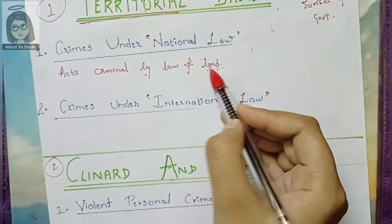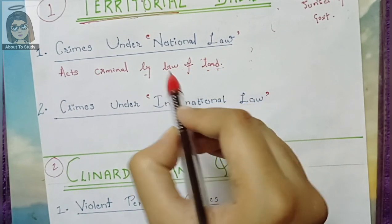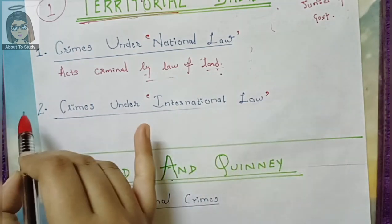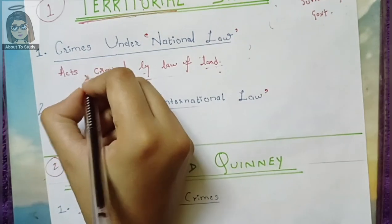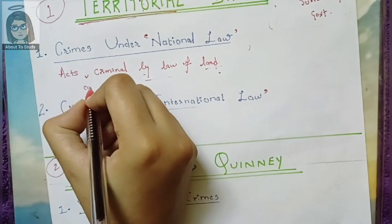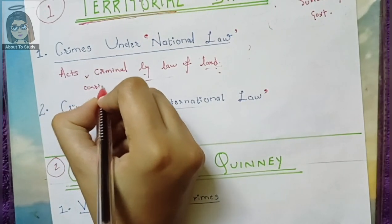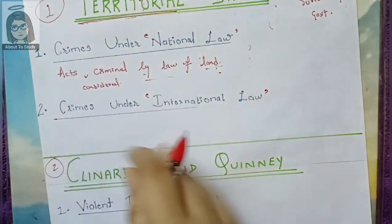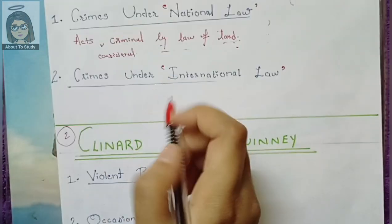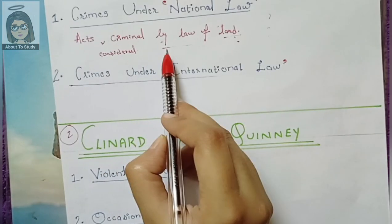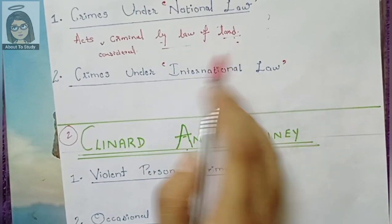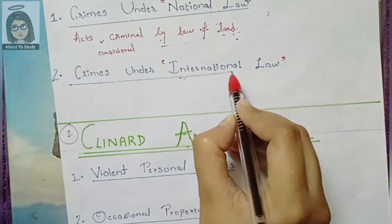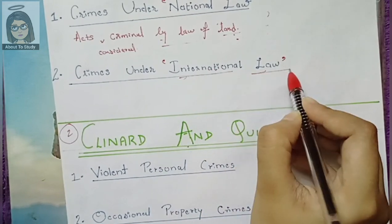For example, homosexuality is not considered a crime in many countries. Polygamy is considered acceptable in many places — men can marry more than once, or women as well. So what is a crime varies by country.